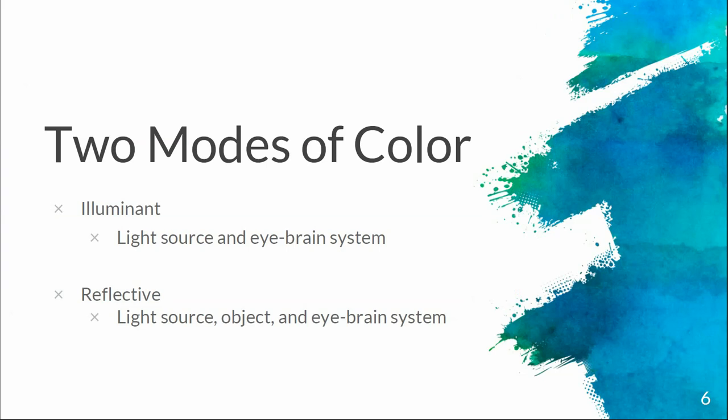We have two major modes of color. One is illuminated, which uses a light source and an eye-brain system — essentially, light illuminating a room. Then there's reflective mode: when we have a light source, objects, and an eye-brain system, that's the actual perception of colors we see. The illuminated light gives us the ability to see beyond black; we see specific colors on objects because they're reflecting light, and the wavelength being reflected controls what color we perceive.